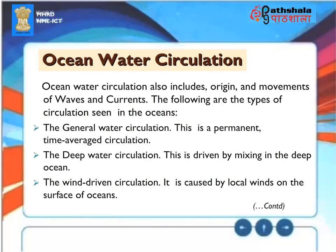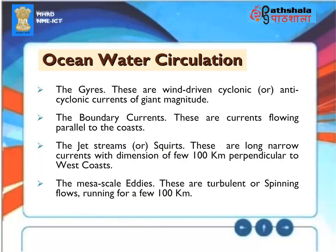Ocean Water Circulation. Ocean water circulation includes the origin and movements of waves and currents. The types of circulation seen in the oceans are: the general water circulation (a permanent, time-averaged circulation); the deep water circulation (driven by mixing in the deep ocean); the wind-driven circulation (caused by local winds on the surface); the gyres (wind-driven cyclonic or anti-cyclonic currents of giant magnitude); the boundary currents (flowing parallel to the coasts); the jet streams or squirts (long narrow currents a few hundred kilometers perpendicular to west coasts); and the mesoscale eddies (turbulent or spinning flows running for a few hundred kilometers).